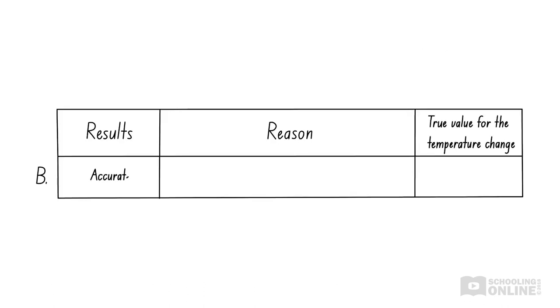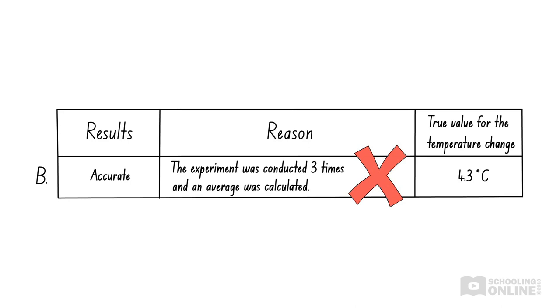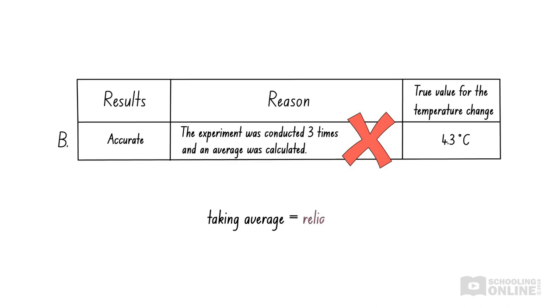Option B describes repeating the experiment and taking an average. This is definitely an important thing to do, but it has no effect on the accuracy of the data. Remember, accuracy is about how the equipment is used and how the experiment is performed. Instead, taking an average improves the reliability of data, which refers to repeating experiments and obtaining similar results each time. Therefore, option B is incorrect.